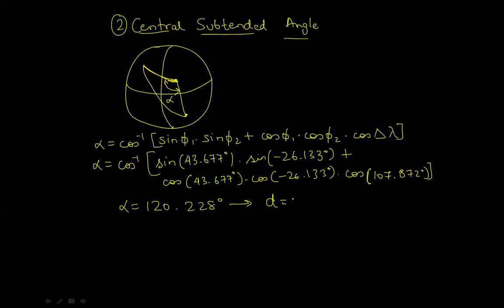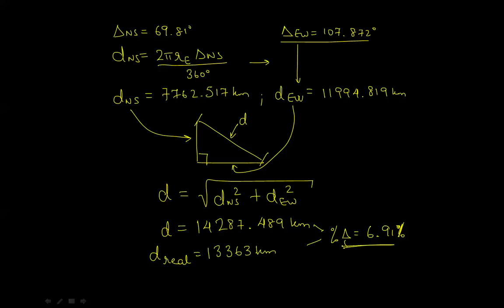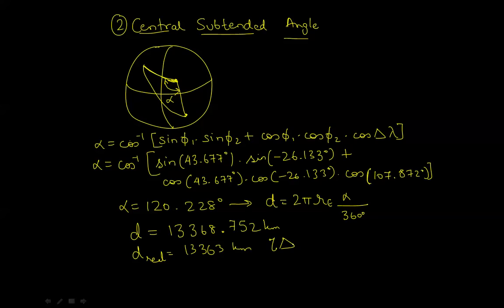The great circle distance will be 2π, radius of the earth, multiplied by alpha, divided by 360 degrees. If you perform this calculation, you will get d using this method as 13,368.752 kilometers. It is very close to the real value, which is 13,363 kilometers. In fact, so close that our delta difference, which was almost 7% for the first method, here the delta difference is going to be only 0.043%. So it's not even half a percent, it's less than half a percent.